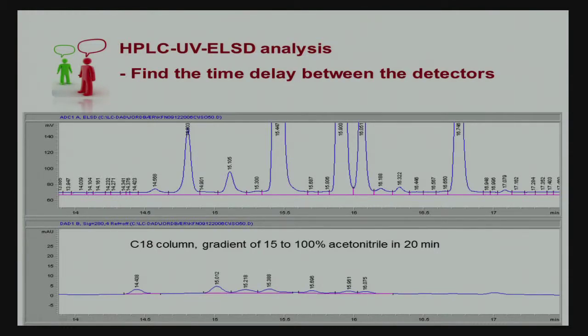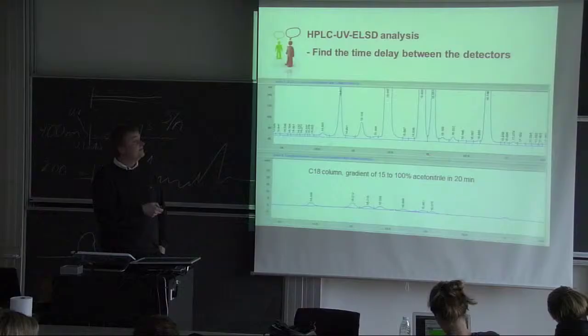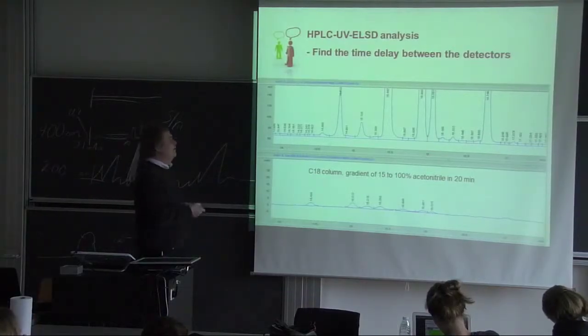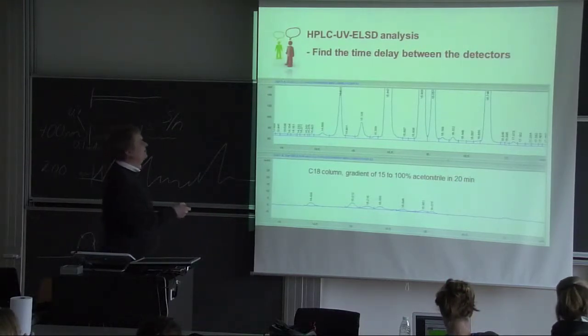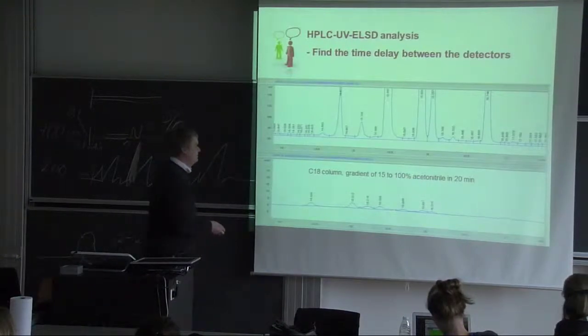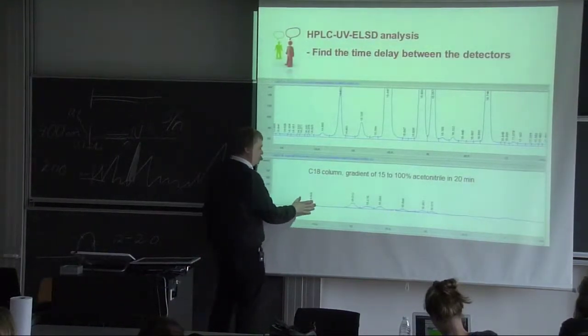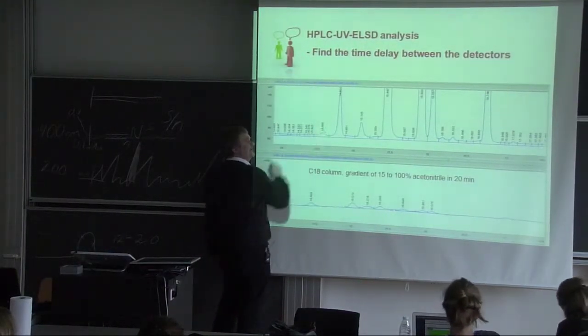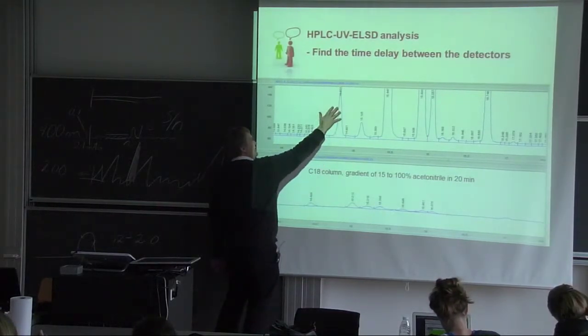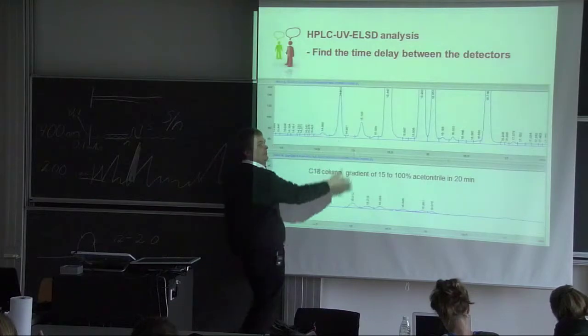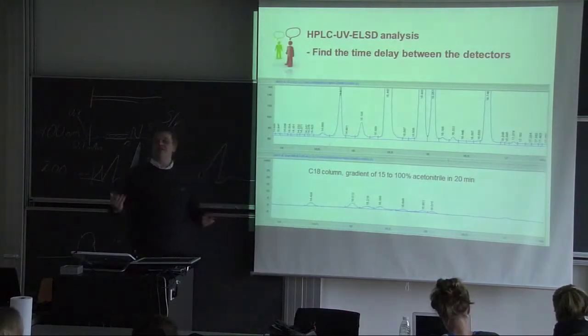And then, evaporative light scattering, which you can see more. You can actually see the strawberry extract. So a peak must first appear here, and then here. On the other hand, you know, they could be compounds only seen here, and not seen here, and the opposite. You know, each detector sees various things.